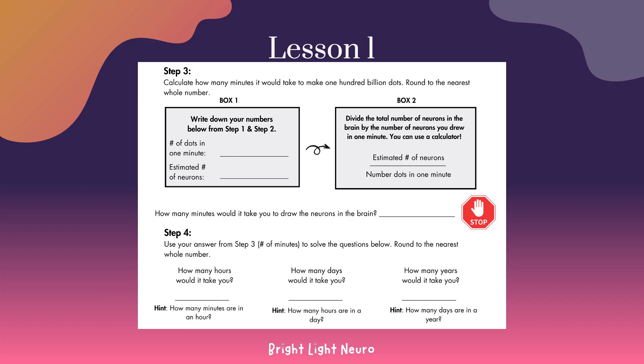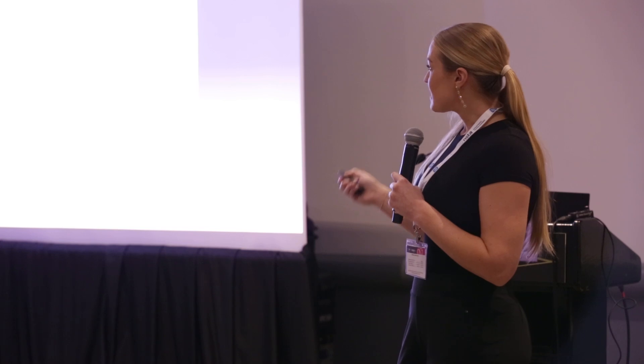They write that number down, then write down 100 billion, and then they have to do some pretty complex math — they can use a calculator. I recommend modeling this for your students first. I had my kids just knock off the decimal points since that wasn't the point of the lesson. Eventually they find out how many minutes it would take them to draw the number of neurons in the brain.